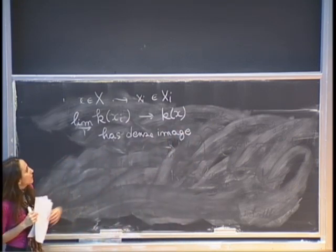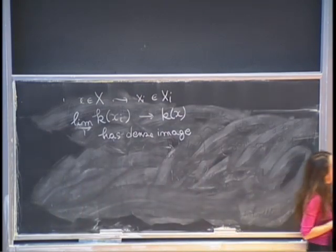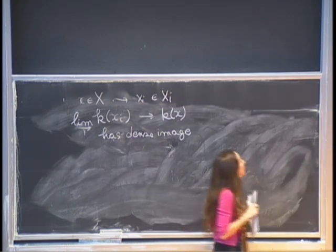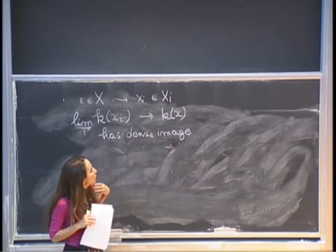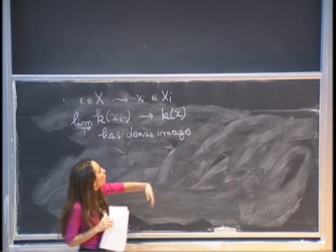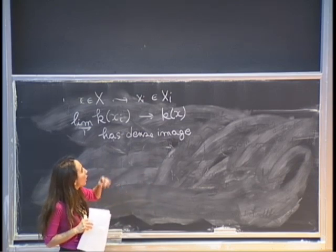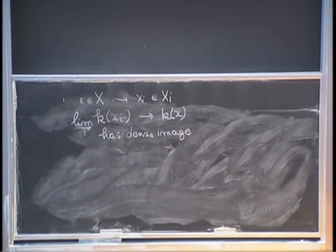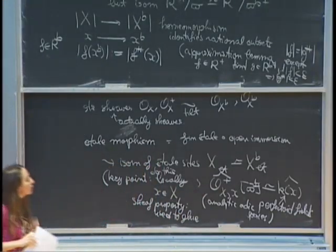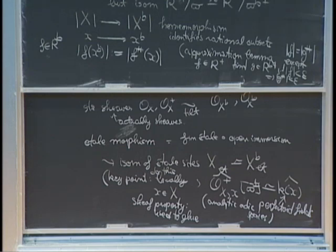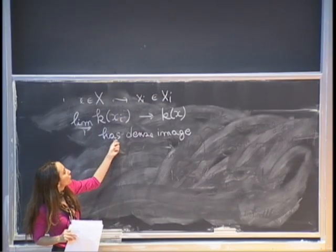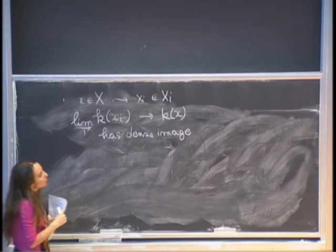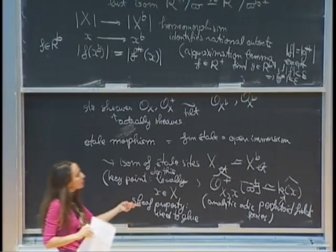For any point x of x, you get induced points x_i of x_i, and the induced map from the direct limit of the residue fields of the x_i to the residue field of x should have dense image. The reason for this condition is similar to why completed residue fields appear in the proof of almost purity: we want to descend finite étale morphisms to finite level, and this condition on residue fields is enough for that.